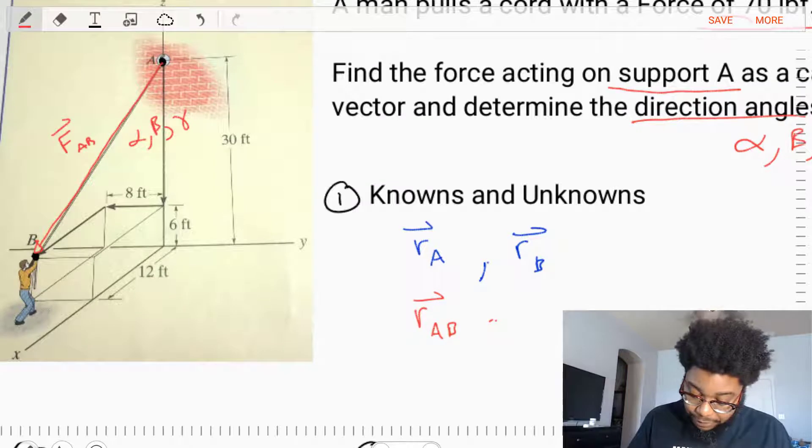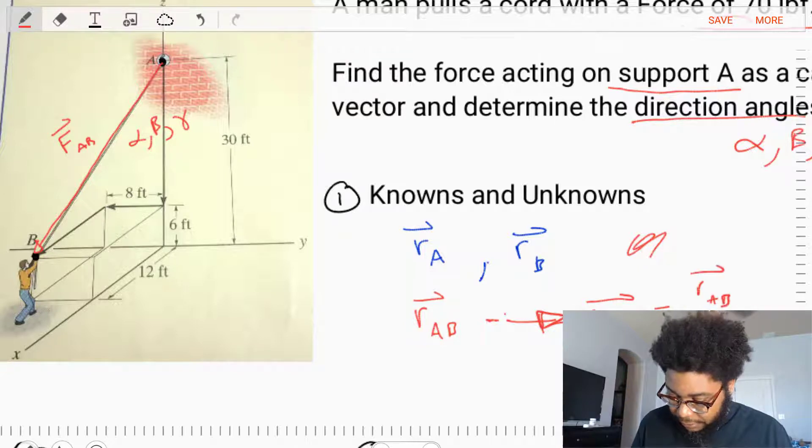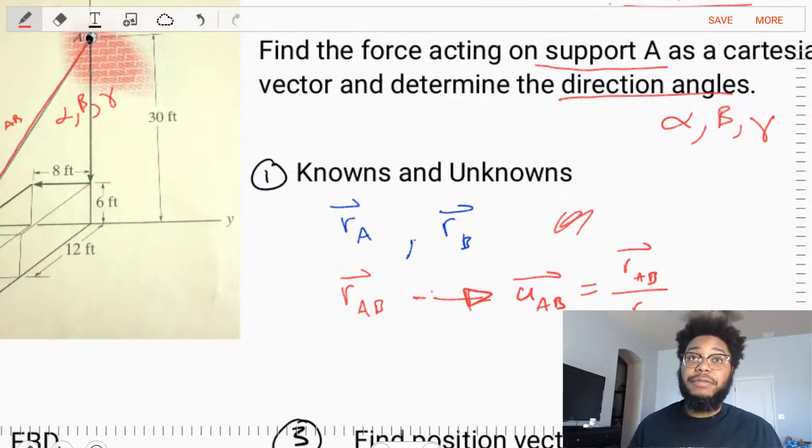And from that vector, we may also find the unit direction. So the actual direction of RAB. Where the unit direction vector is equal to the vector divided by its magnitude.